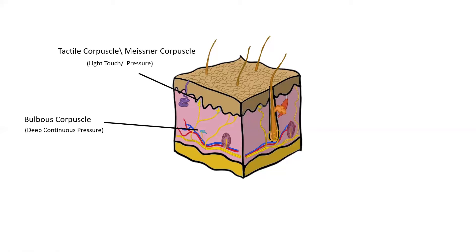And next, we have the lamellar corpuscle or Pacinian corpuscle. And these are for deep pressure again, but these are much quicker to adapt.